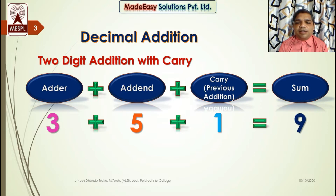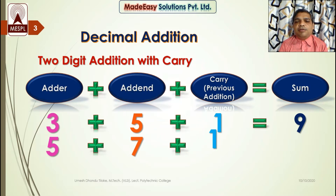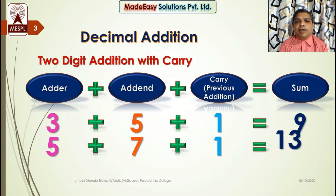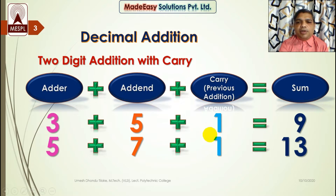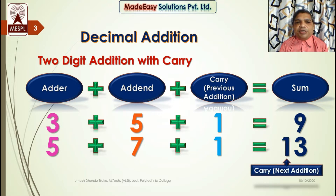Let us consider one more example. Augend 5 plus addend 7 plus carry 1: 5 plus 7 equals 12, plus 1 equals 13. Now 13 is not a single digit — the sum is larger than the largest possible digit, 9. So we consider 3 as the sum of the current addition and 1 as the carry for the next addition operation. This is the principle we use in decimal addition.